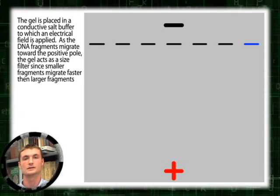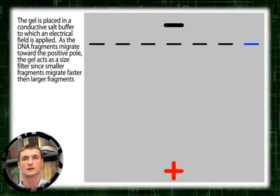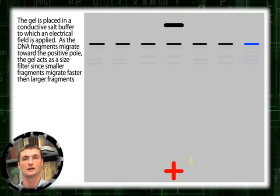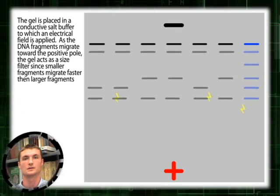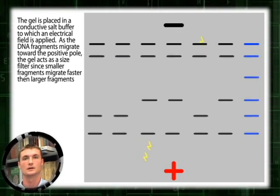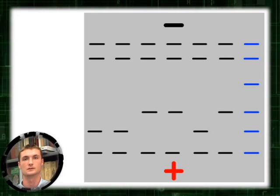The gel provides a matrix to sieve the DNA fragments. An electrical field is applied and the negatively charged DNA migrate towards the positive pole. Small fragments move faster in the matrix.